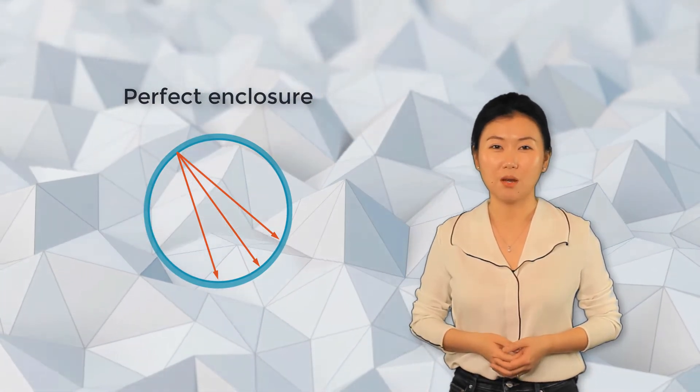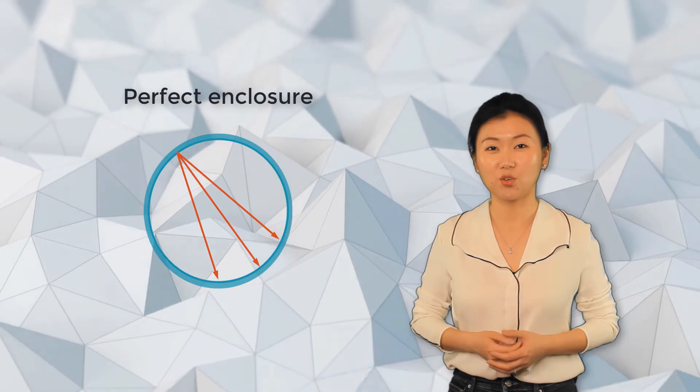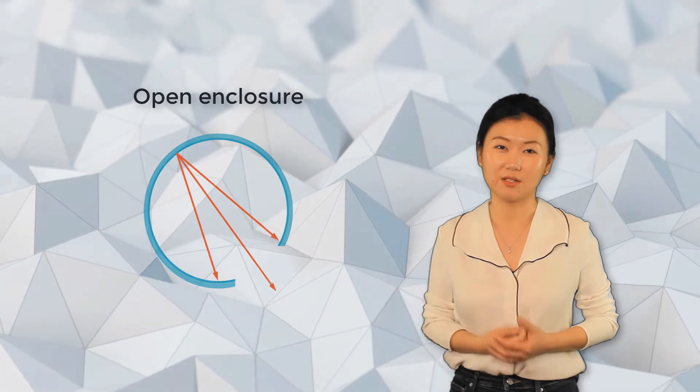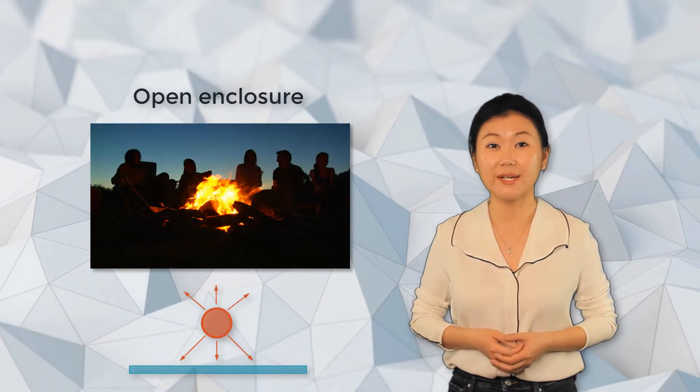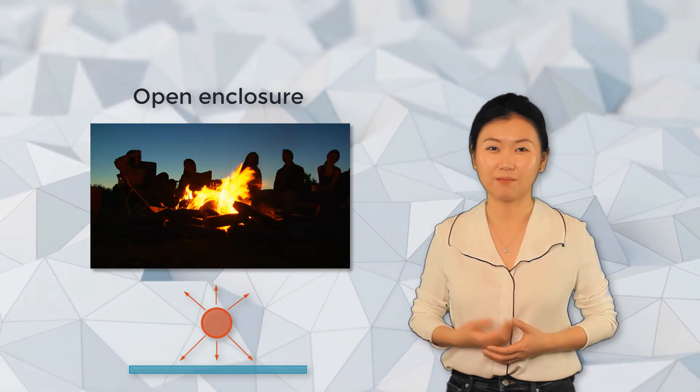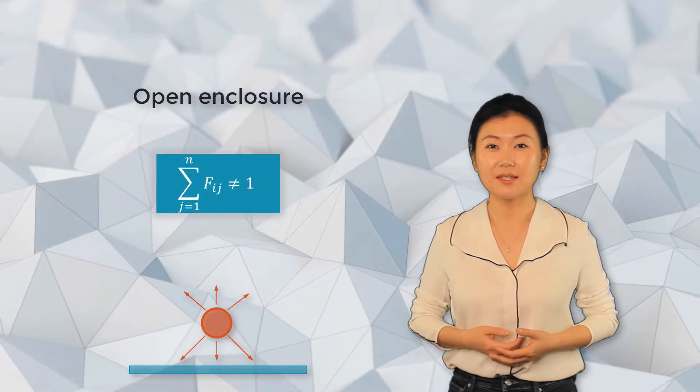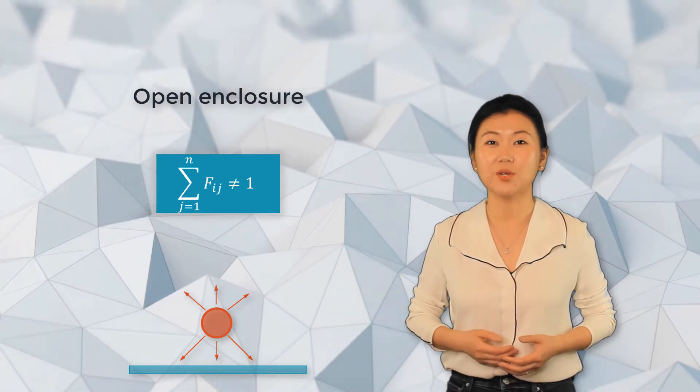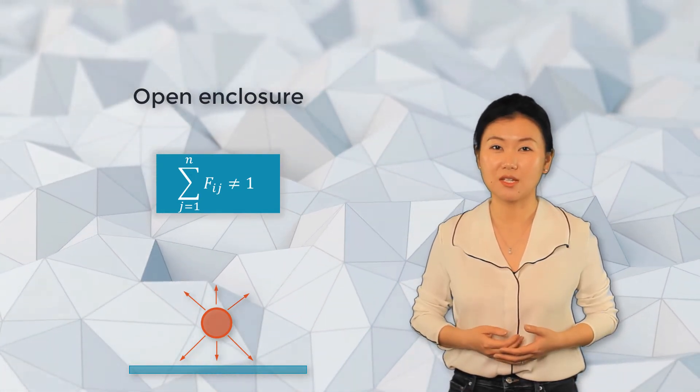Perfect enclosure is not a must for radiation though. It's also normal that radiative energy is lost to the ambient environment, for example, the radiative energy from the campfire to the people around it. In such cases, the sum of view factors is expected to not be unity, as some radiative heat is lost to the surrounding environment.